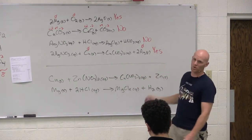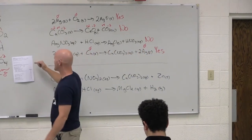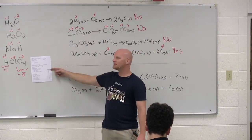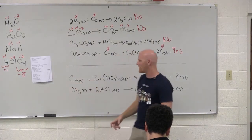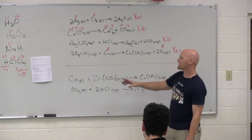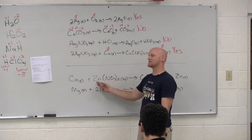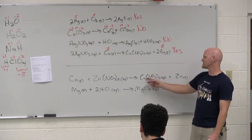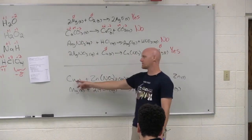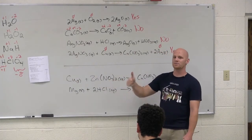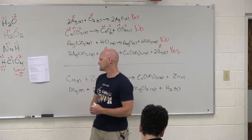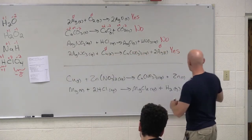We have what's called an activity series on your handout. The most active metals are at the top of the list and they get less active going down. Think of it this way: copper is alone and sees that zinc has a nitrate partner. Copper says 'I'm better looking than zinc' and tries to steal nitrate. But the only way copper can replace zinc is if copper is higher on the activity series list. Is copper higher than zinc? No — zinc is higher. So this reaction is not spontaneous.